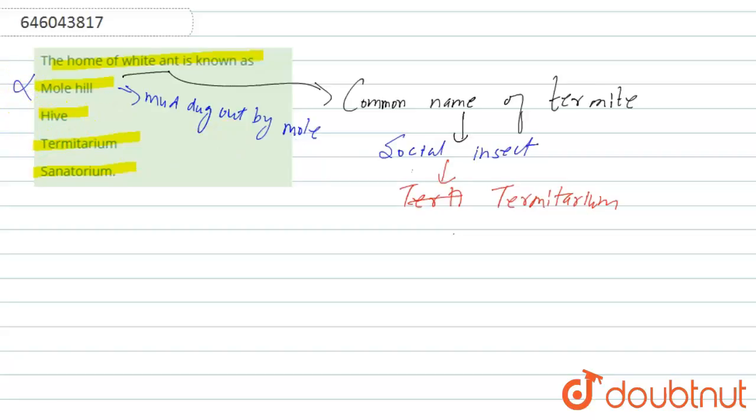Option 2 is hive. Actually, hive is the home of honeybee, so this one is also incorrect.